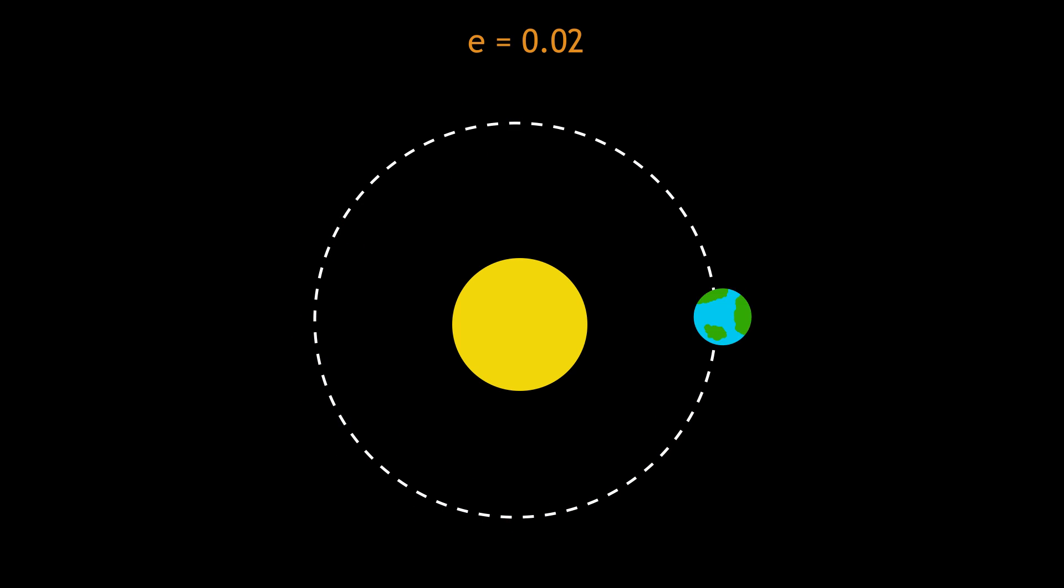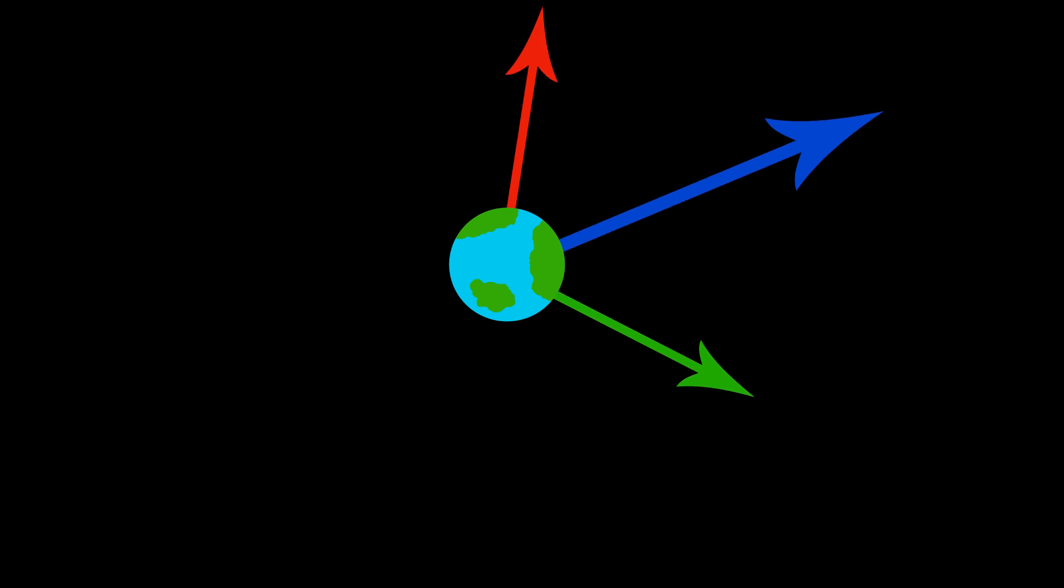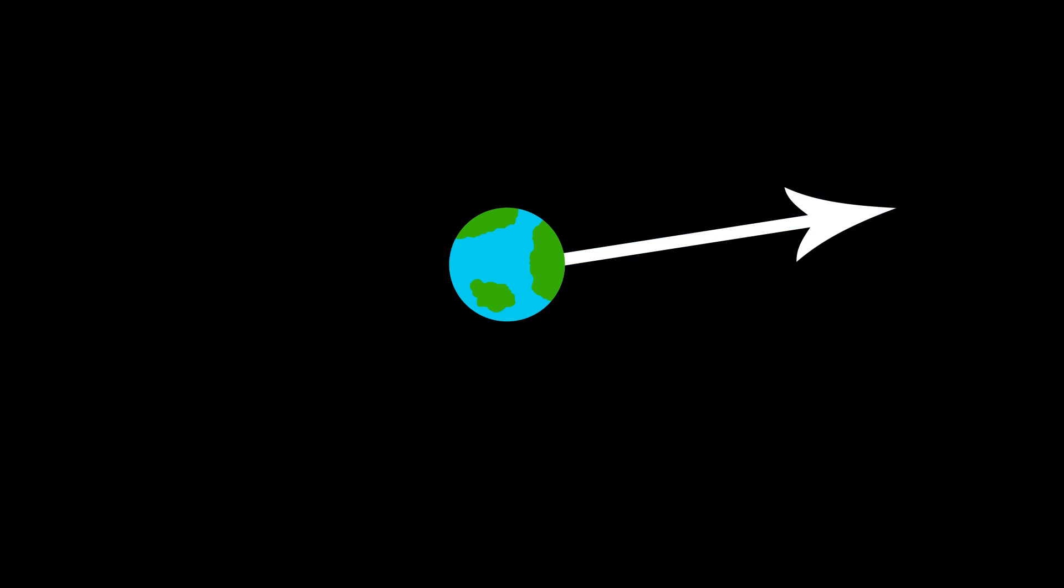This means the motion can be easily analyzed with Newton's second law. Newton's second law says that the resultant force acting on any object is equal to its mass times its acceleration. F equals Ma.